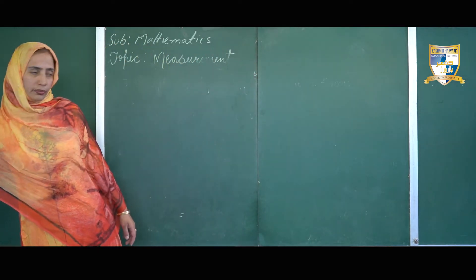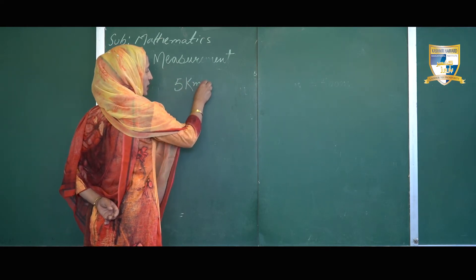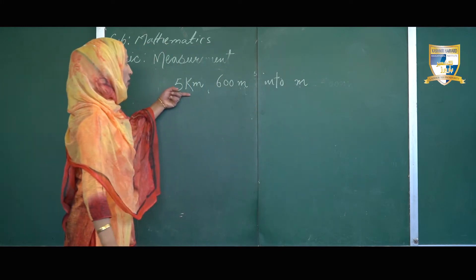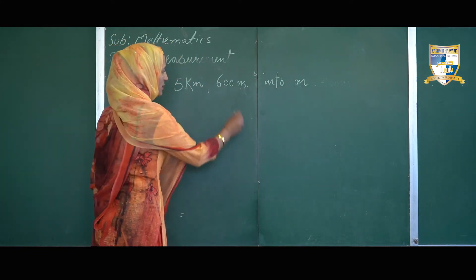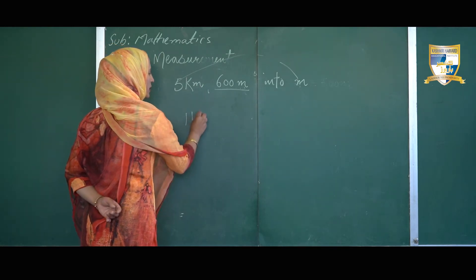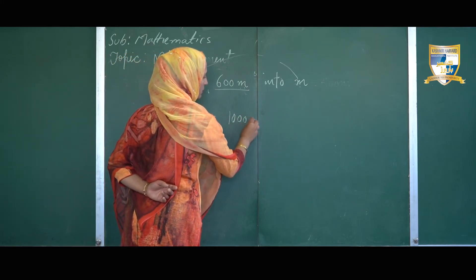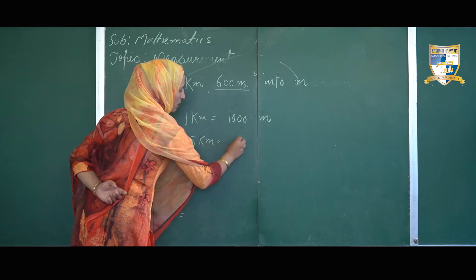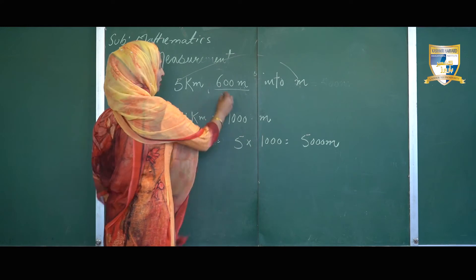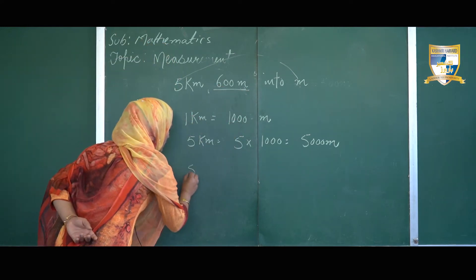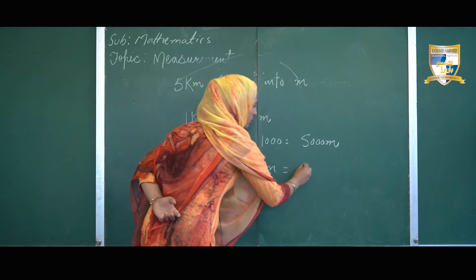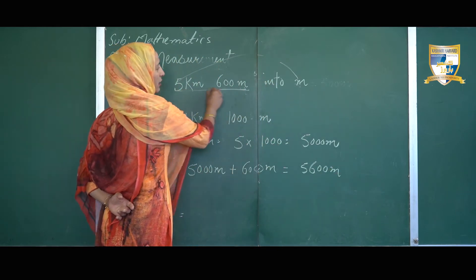Let us take another example: convert 5 kilometers 600 meters into meters. Since 600 meters is already in meters, we only need to convert 5 kilometers. As we know, 1 kilometer consists of 1000 meters, so 5 kilometers equals 5 multiplied by 1000, that is 5000 meters. We already have 600 meters. Adding them up: 5000 meters plus 600 meters equals 5600 meters.